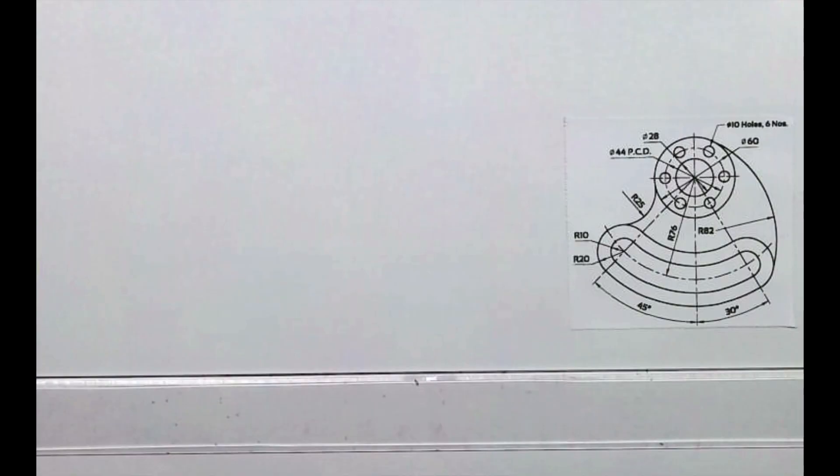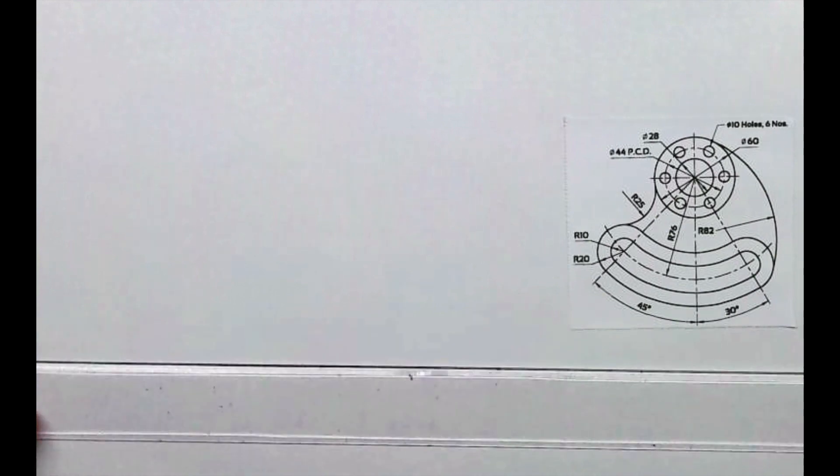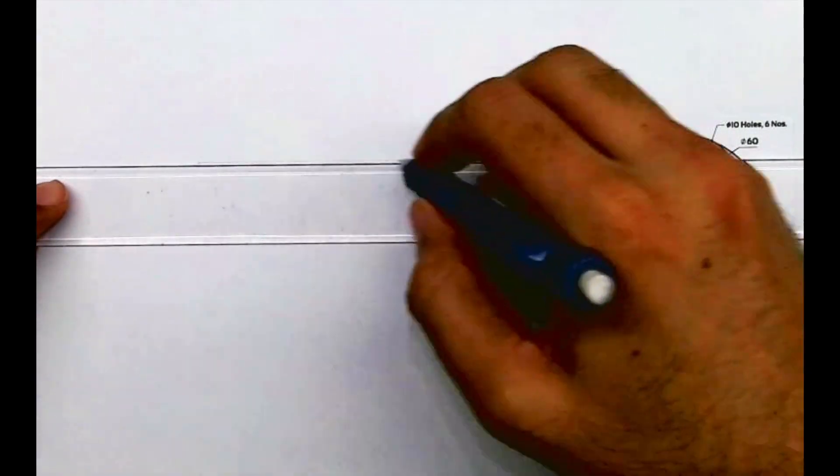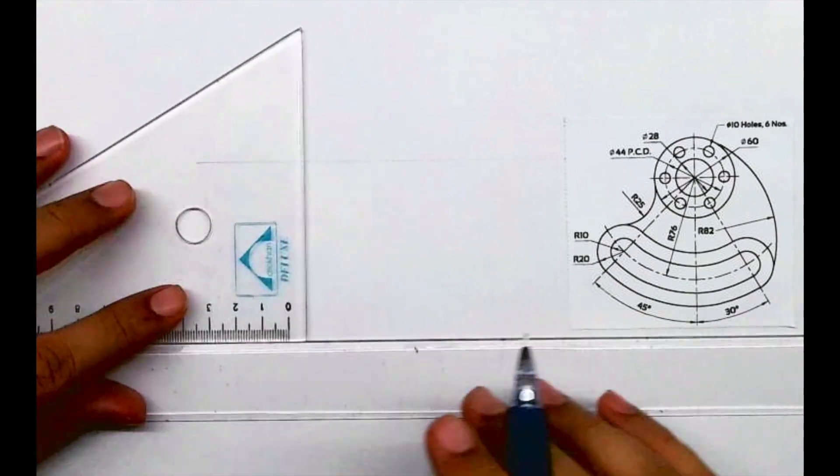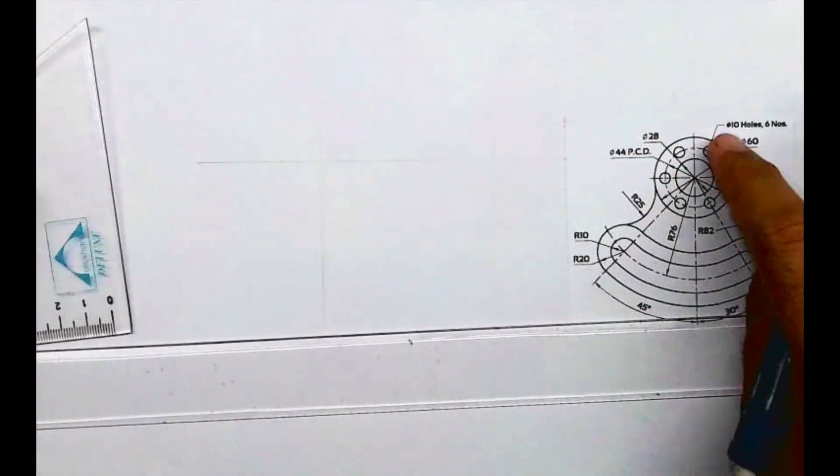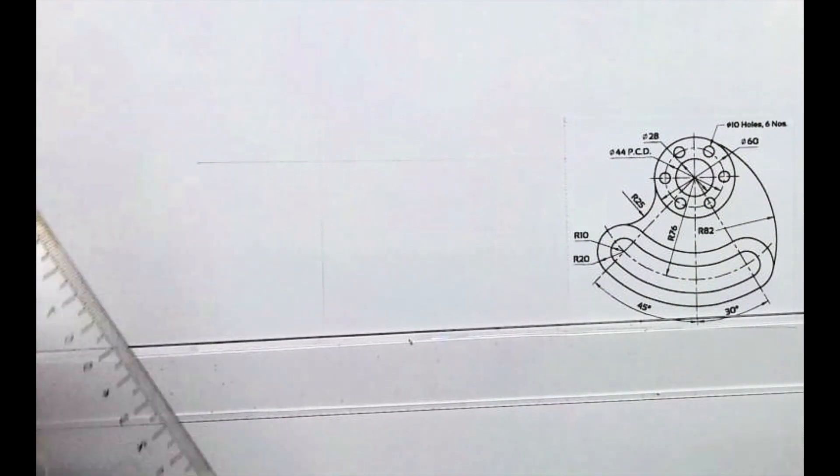Welcome to technical drawing. Today we'll see this sum. We have to draw this ditto same. So what we will do first, we will draw a plus and from the center point we'll draw radius 30.